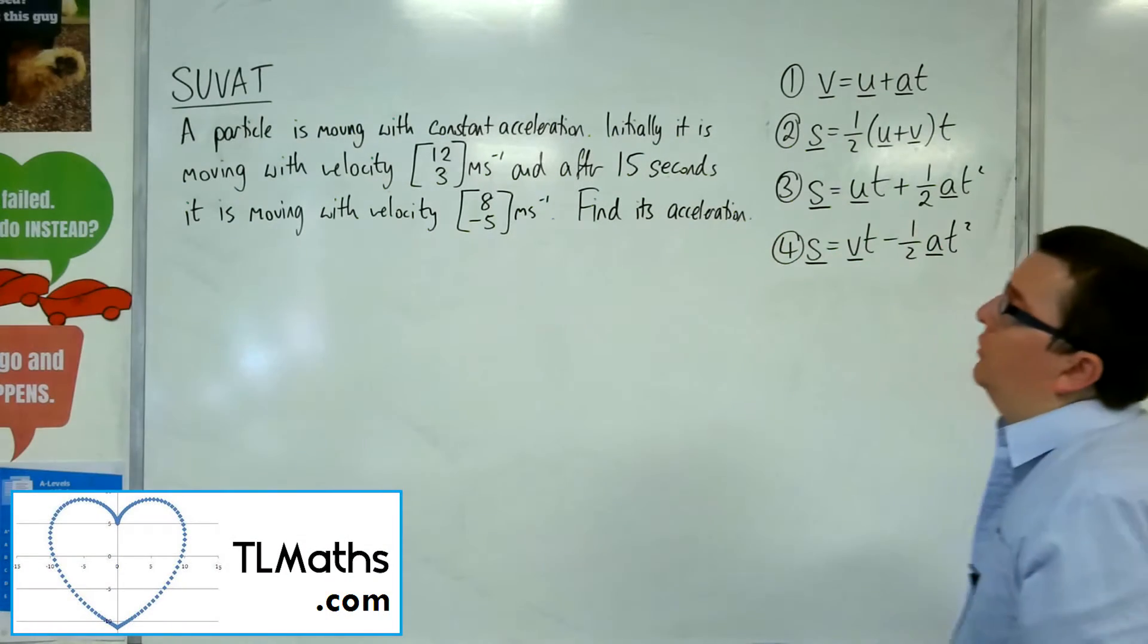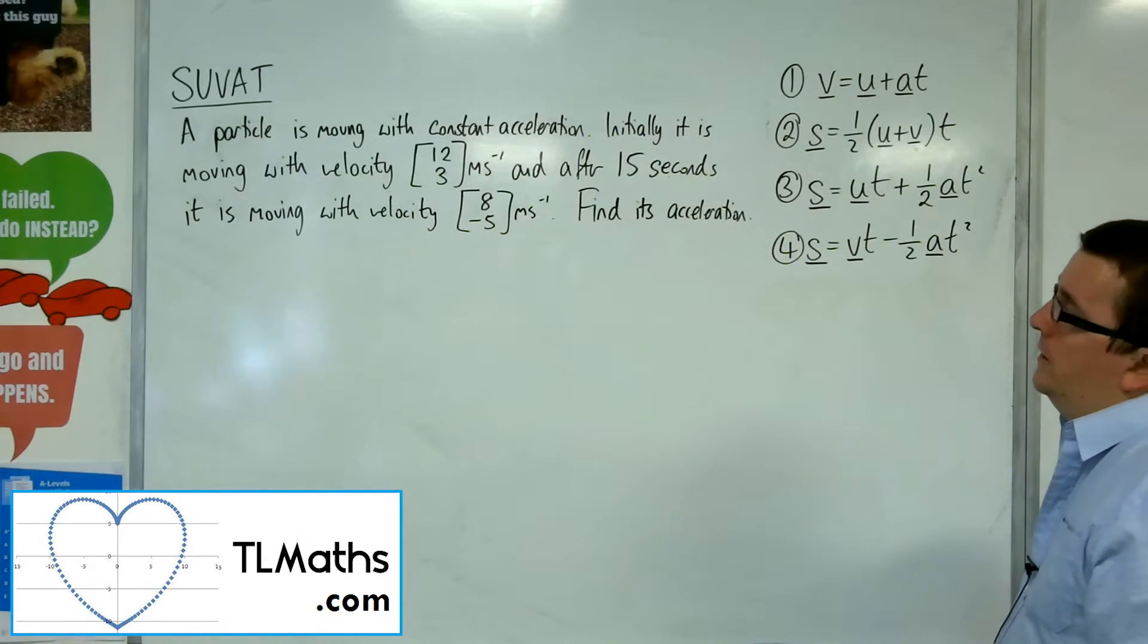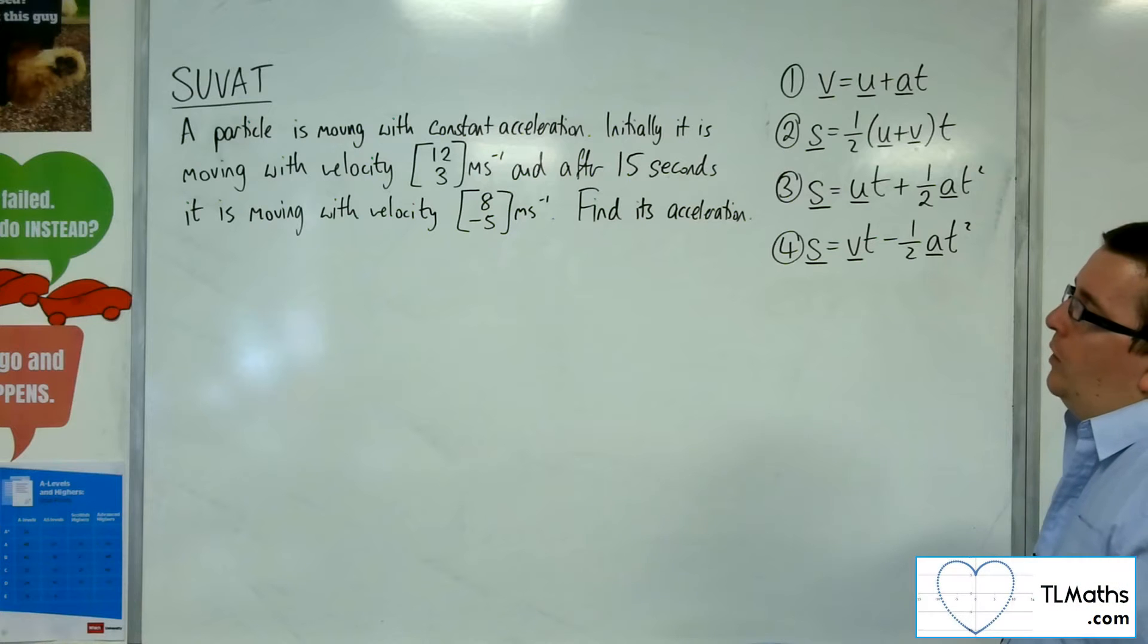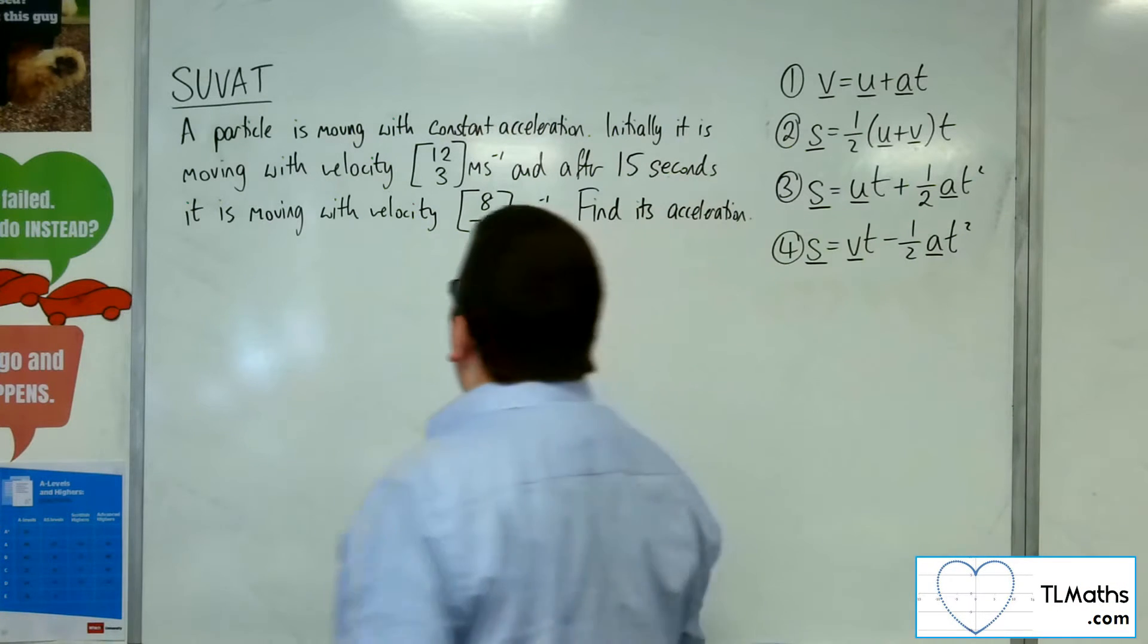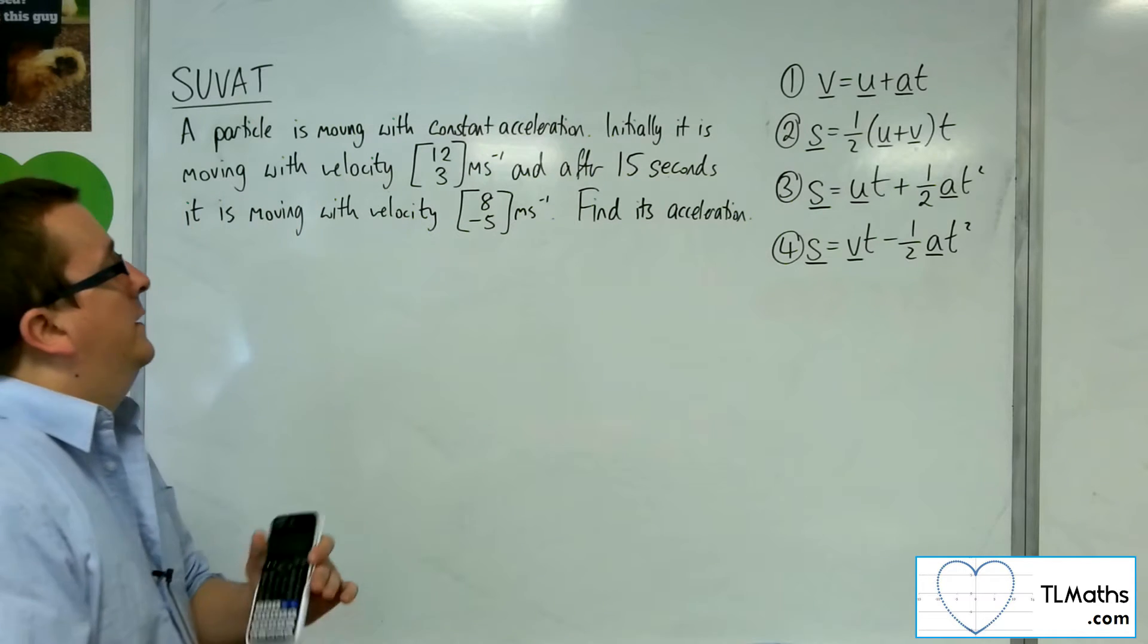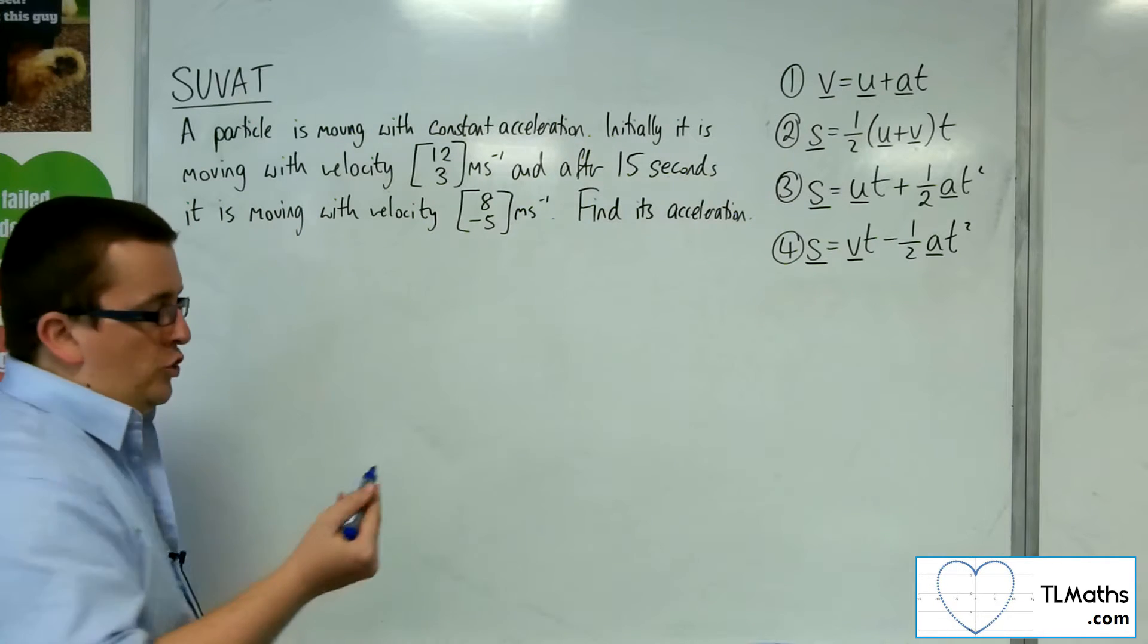In this video, a particle is moving with constant acceleration. Initially it is moving with velocity 12, 3 metres per second, and after 15 seconds it is moving with a velocity 8 minus 5 metres per second. Find its acceleration.